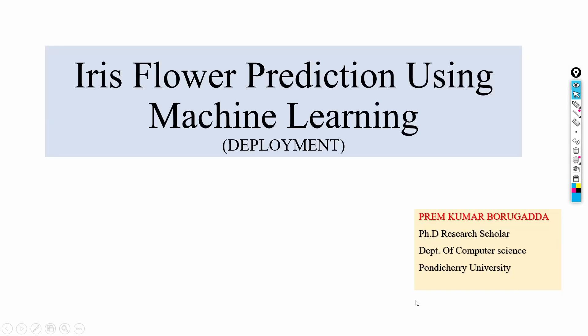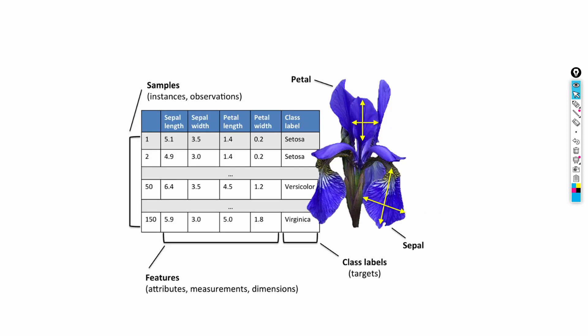Hi friends, today we are going to discuss about the iris flower prediction by using machine learning. Here we are going to execute the deployment section. We have to identify the different types of flowers. Setosa is one kind of flower, versicolor is one kind of flower, and virginica is one kind of flower. These are three classes, so it means it is a multi-class classification problem.